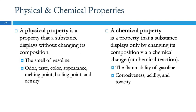Physical properties are characteristics of something: smell, taste, color, what it looks like, melting point, boiling point, density, length, width, or mass. You can measure or observe a physical property without changing the composition of the substance. For example, I can measure the length of this piece of paper or observe its color — it's yellow — and doing that doesn't change the paper. Those are physical properties.